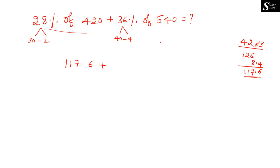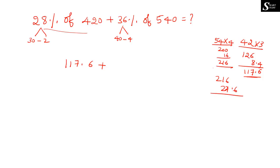For 36% of 540: 10% of 540 is 54, so 40% is 54 × 4 = 216. Since we took 40% instead of 36%, we need to subtract 4% of 540. 1% of 540 is 5.4, so 4% is 21.6. Therefore 36% of 540 = 216 − 21.6 = 194.4.